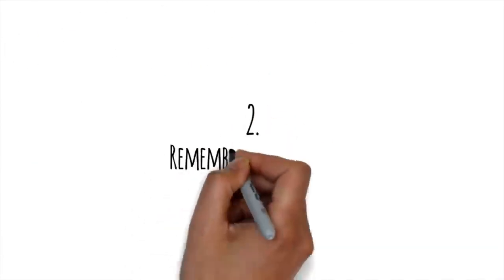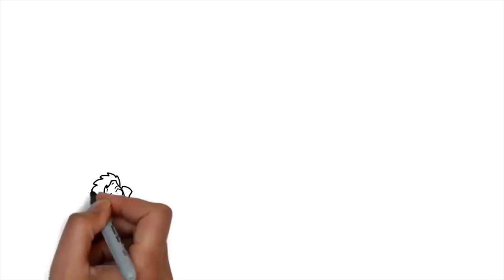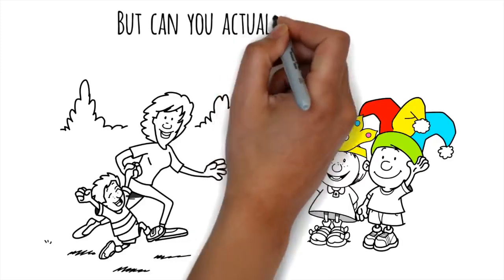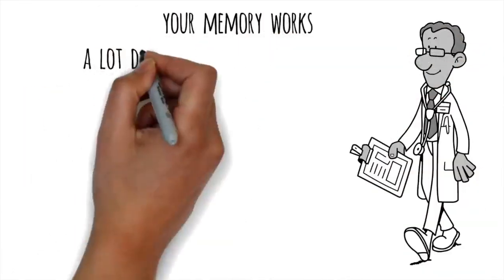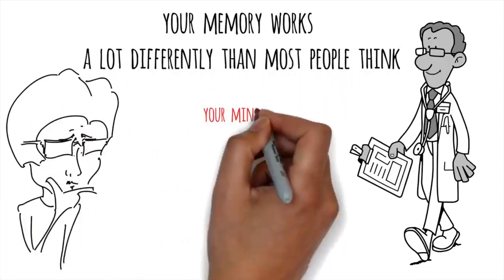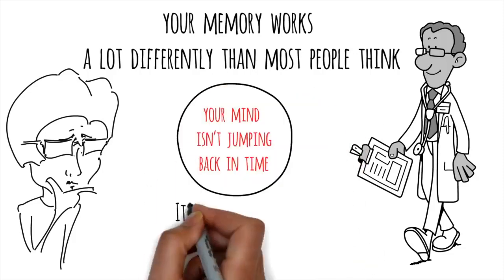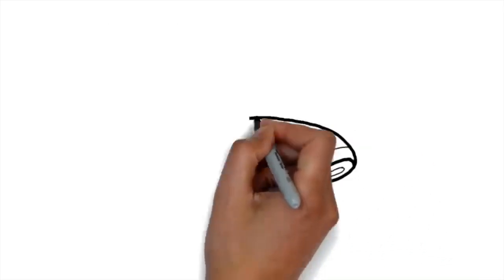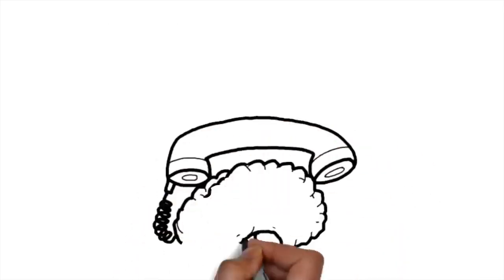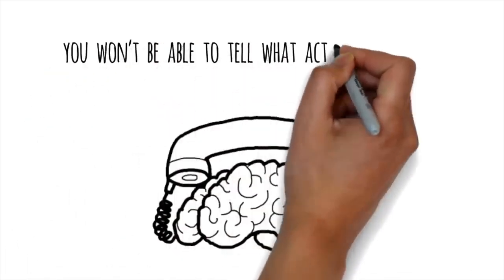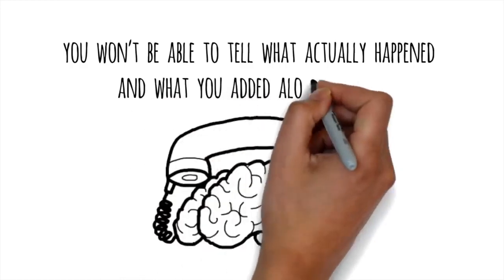Number 2. Remember remembering. What's your earliest memory? You might remember playing with your parents in the park or one of your first birthdays, but can you actually remember that far back? Neuroscientists recently discovered that your memory works a lot differently than most people think. When you think back to that early memory, your mind isn't jumping back in time. It's remembering the last time you remembered. In other words, your memory is like playing telephone. Every time you re-remember something, it changes a little bit more. Eventually, you won't be able to tell what actually happened and what you added along the way.